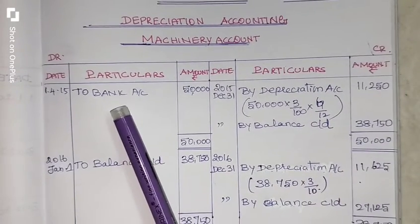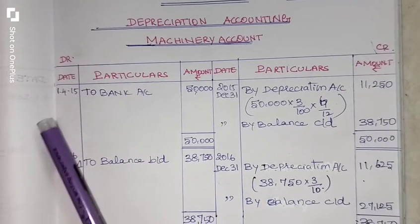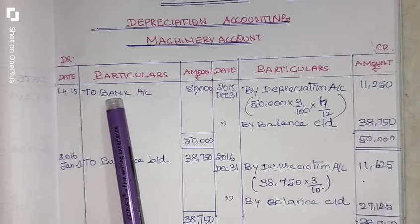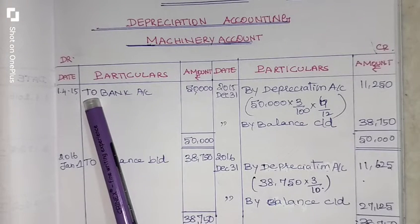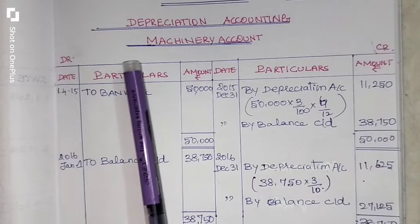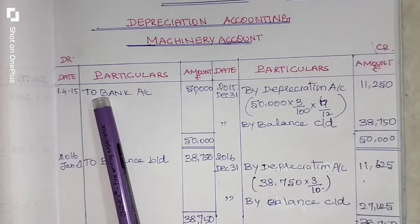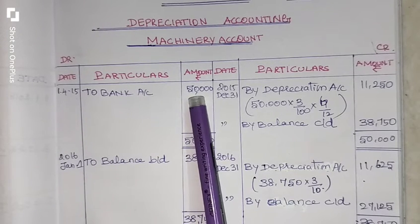First, the company purchased machinery dated on 1st April 2015. The journal entry is: Machinery account debit to Bank account. Machinery account is on the debit side, so on the debit side you enter the opposite account — 'To Bank account' — Rs. 50,000.